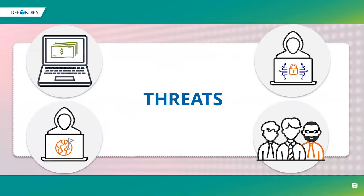Before we get into phishing, let's talk about who these bad actors are, because cyber threats come from four main areas. In the top left, we have cyber criminals causing crimes to make money. In the top right, hacktivists attack because they don't like a company or political party — Anonymous is a great example.